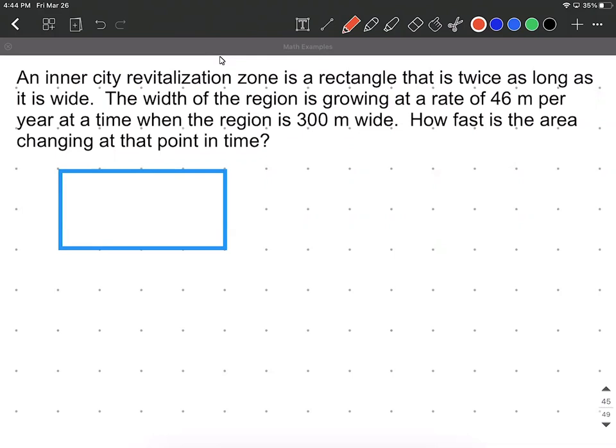How fast is the area changing at this point in time? So what we're looking for is dA/dt. That's our unknown right now. Let's also go ahead and list out all the information that we do know. In this case, the width dW/dt, the width is changing with respect to time at a rate of 46 meters per year at the time when the region is 300 meters wide.